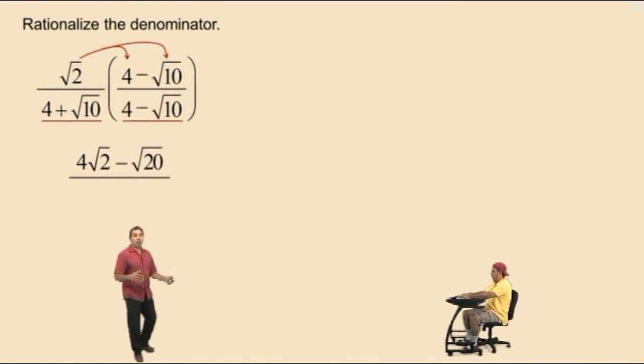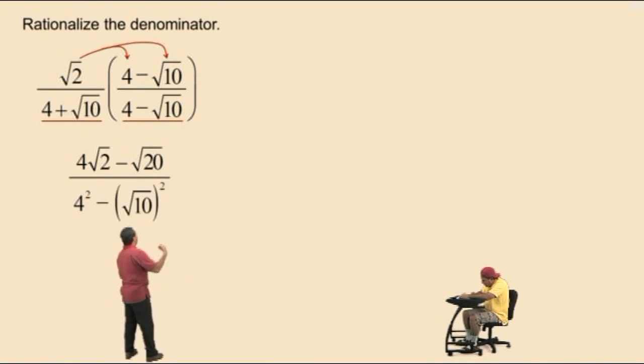Now, remember, when you multiply conjugates together, you end up with a difference of 2 squares. So, Charlie, what's our first square? 4 squared. That's right. Then we have a subtraction. What's our second square? Square root of 10 squared. That's right.